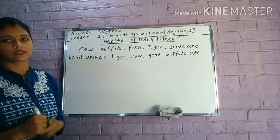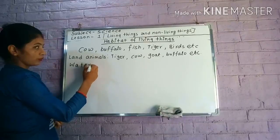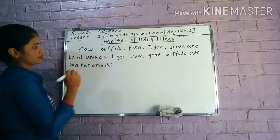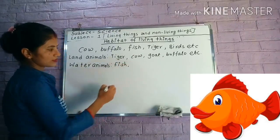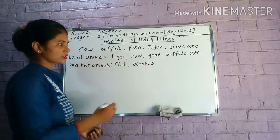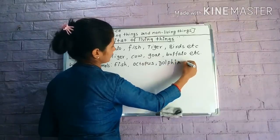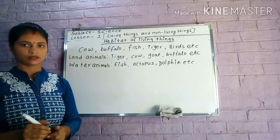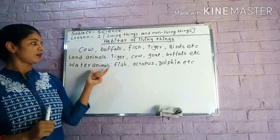Now another category is water animals. Water animals are fish, octopus, dolphin, etc. These animals are found inside the water, so these animals are called water animals because they live inside the water.